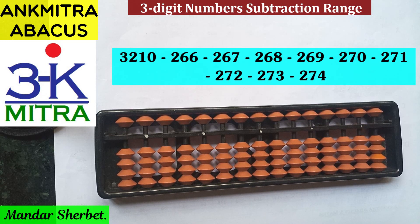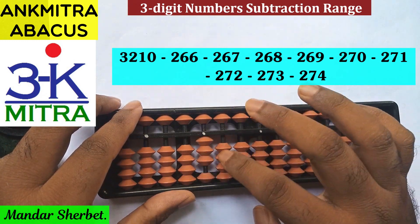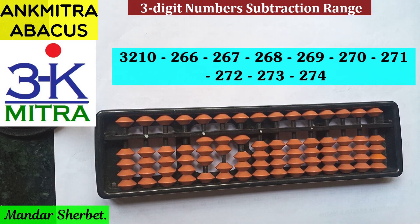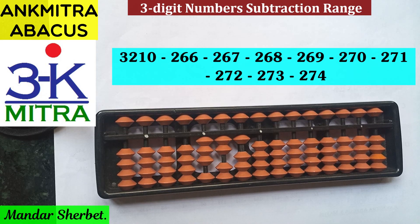The starting number this time that I will be taking is 3210. So 3, 2, 1, and 0. The numbers that I will be subtracting from this starting number are 266 to 274. So there are a total of 9 numbers here: 266, 267, and so on up to 274.